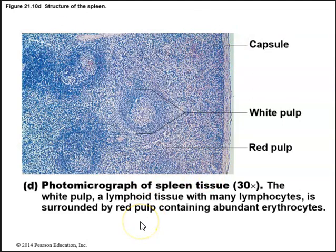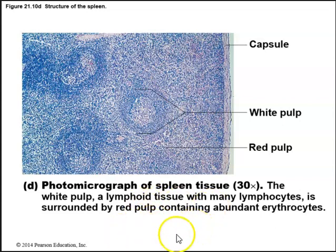The white pulp is a lymphoid tissue with many lymphocytes, surrounded by red pulp containing abundant erythrocytes or red blood cells.